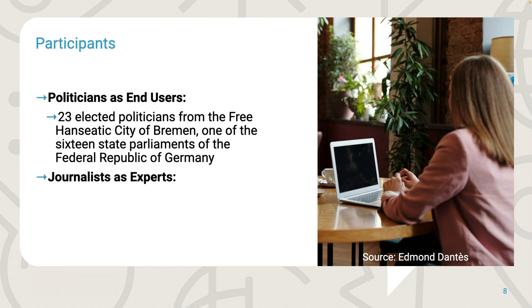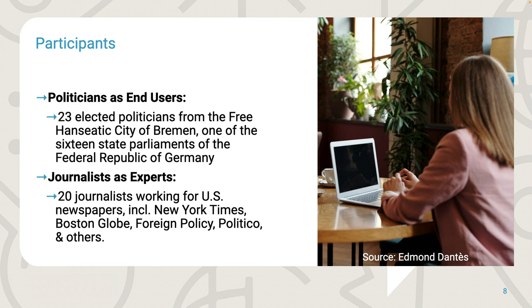We used two distinct newspaper sampling strategies to recruit 20 journalists working for U.S.-based English language newspapers. The first strategy was based on readership, looking at the 10 most widely circulated newspapers in the U.S. in 2019, from which we recruited seven experts. The second strategy was based on political alignment, using a meta-ranking by Groupie et al. to identify reliable newspapers classified as left, center, or right. Eleven of twenty experts identified as male and nine as female.